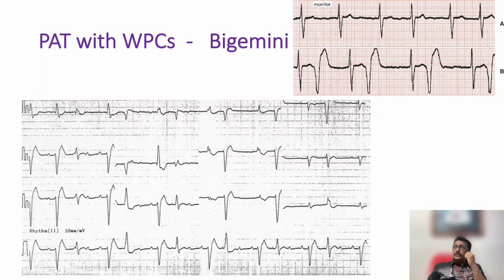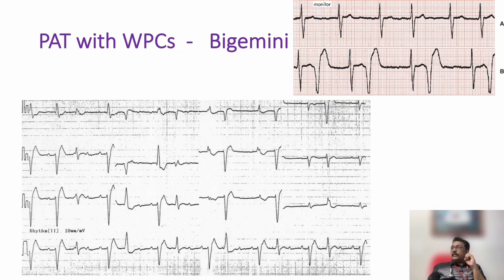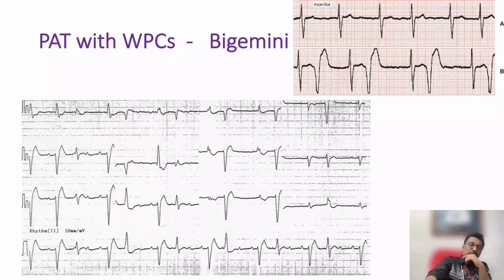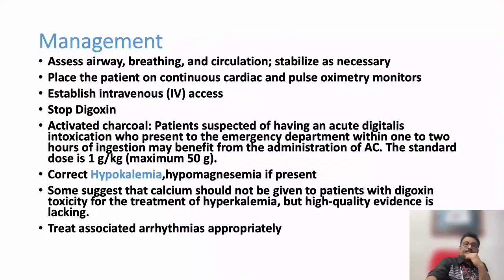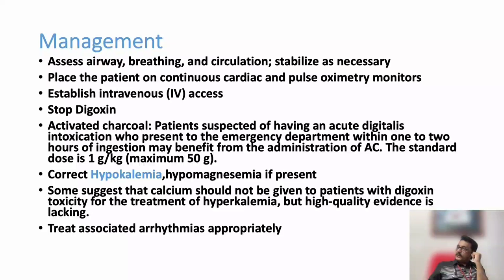Remember: almost all types of arrhythmias are common in Digoxin toxicity, except atrial rhythm with tachycardia. Most of the time, atrial rhythm with bradycardia is what is seen. Now let's discuss how to manage cases of Digoxin toxicity or Cerbera odollam poisoning.